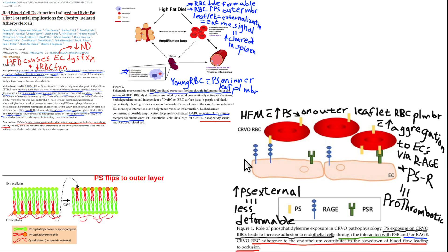Phosphatidylserine externalization: here's the phospholipid. There's a phosphate head which has a charge on it — it's polar. And then there's the fatty acid tails, which are hydrophobic, that sit within the phospholipid bilayer. Phosphatidylserine will flip to the outer leaflet of the plasma membrane. You have an inner and an outer leaflet of the plasma membrane, so going to the outer leaflet is a change in the membrane structure. With a red blood cell, that makes it stiffer and less deformable, less able to pass through capillaries.